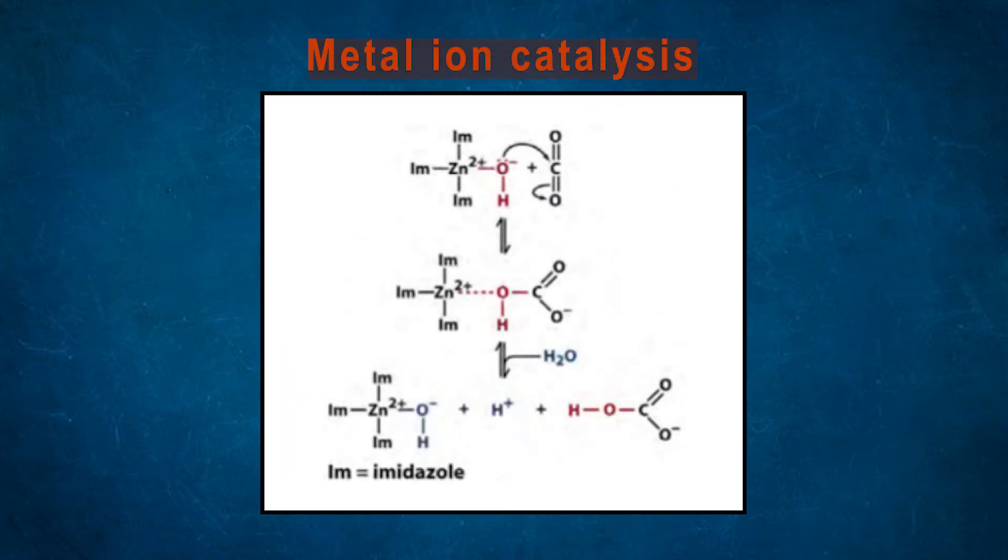In carbonic anhydrase, a zinc ion is present at the active site cleft. The central zinc atom is tetrahedrally coordinated by three imidazole rings of histidine side chains and an oxygen atom of either HCO3- ion or a water molecule. In this way, by making OH with a lone pair, it can easily go for nucleophilic attack.